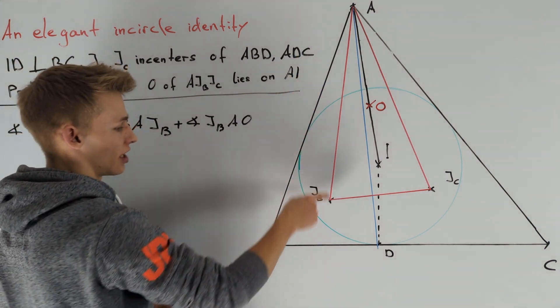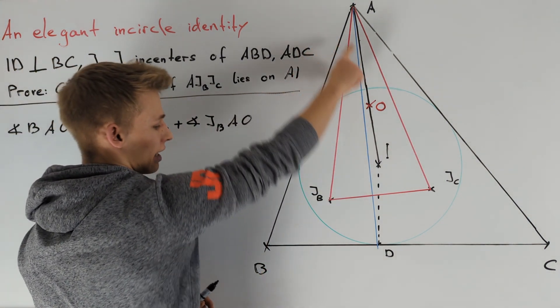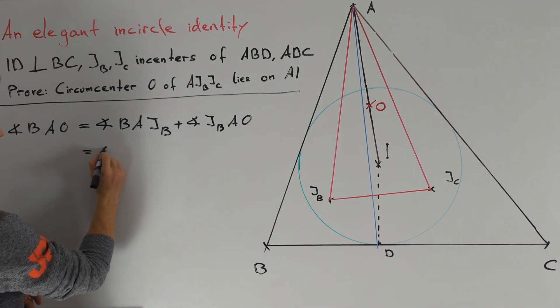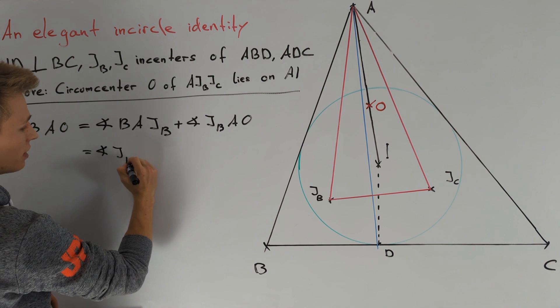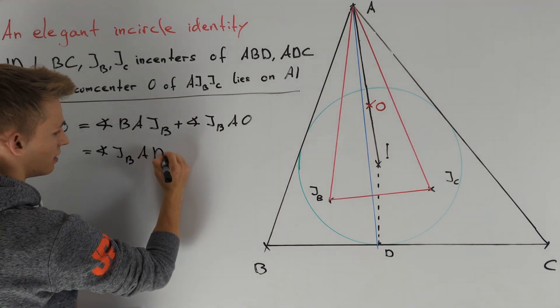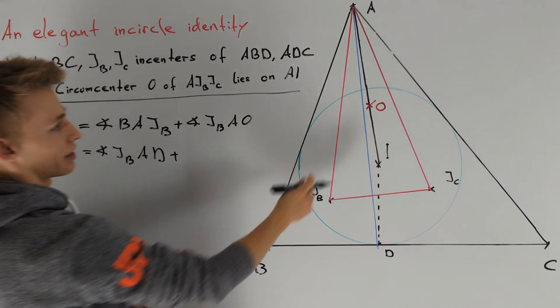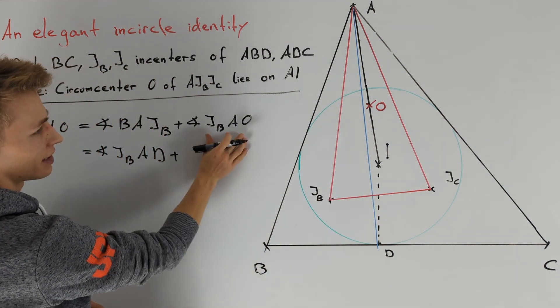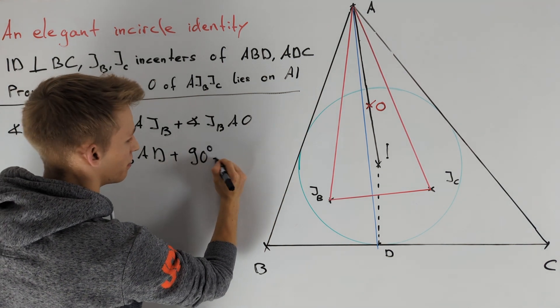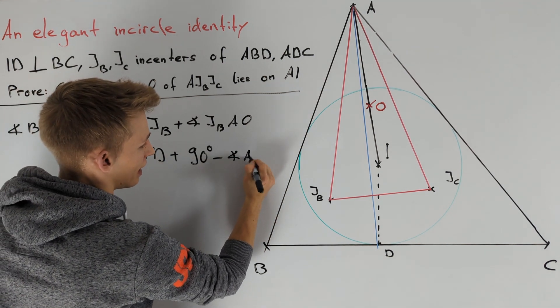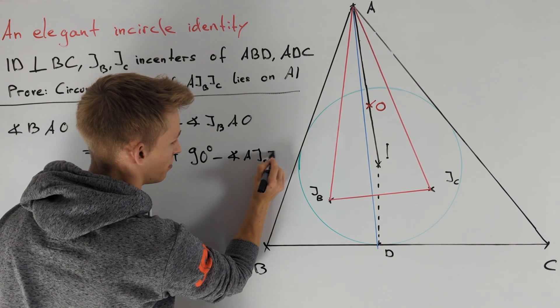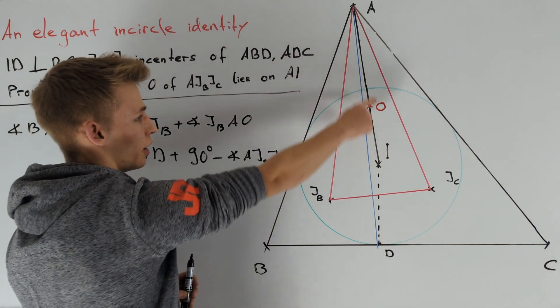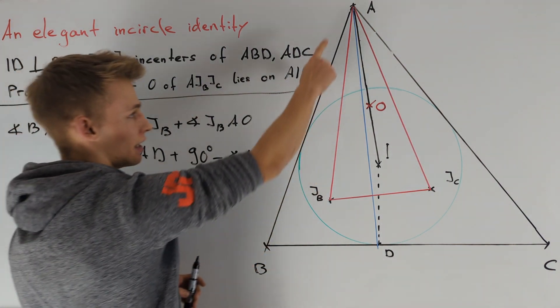Since AJB is the angle bisector of angle BAD, angle BAJB equals angle JBAD. For the second angle, using that O is the circumcenter of triangle AJBJC, we can determine the relationship with angle AJCJB. Remember, our task is to prove angle BAO is half of angle BAC.